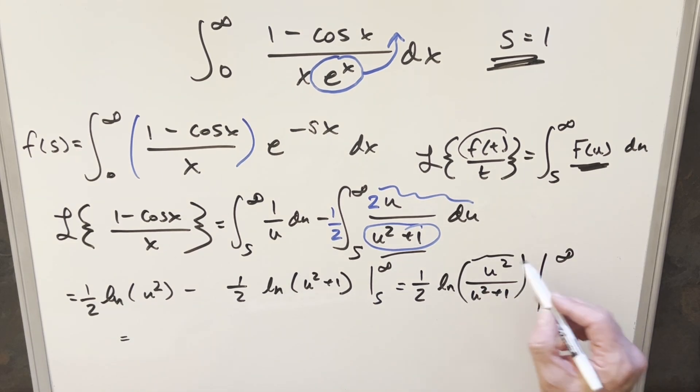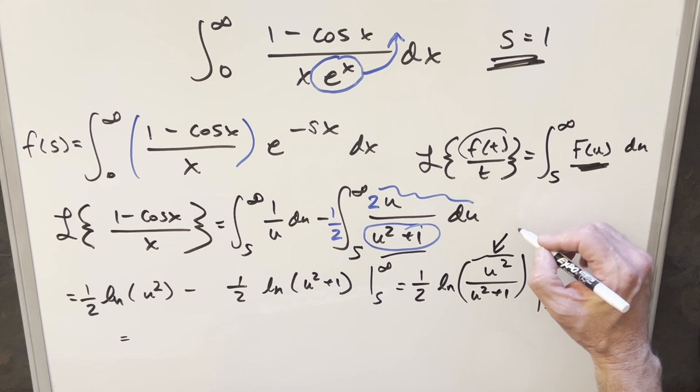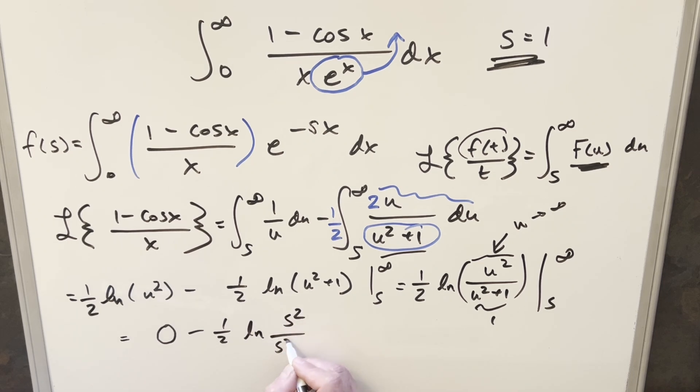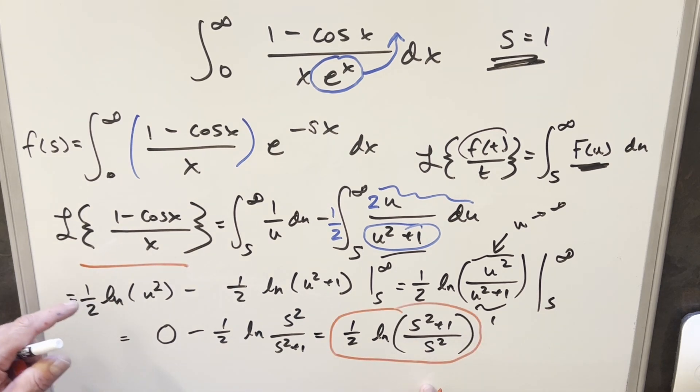Evaluating this at infinity, if you look at this here as a limit with u going to infinity, what's going to happen is this whole thing is going to one. Natural log of one is zero. So our first part is going to be a zero. Second part, let's just plug in s everywhere. So we end up with natural log s squared over s squared plus one. Then let's just clean it up and use the minus sign to flip this so I can write it as one half natural log s squared plus one over s squared. So this here will be our value for this Laplace transform over here to the left.